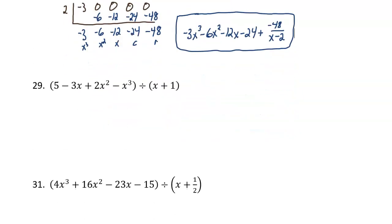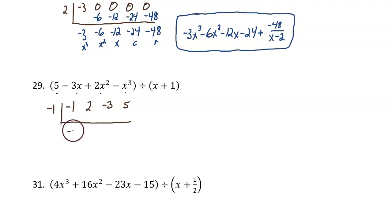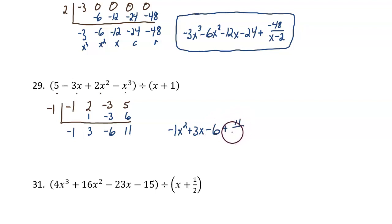Next, number 29. Notice how this polynomial is written backwards. When you list your coefficients, you have to do them in order of decreasing exponent. So we have negative 1 from the x cubed first, then positive 2 from x squared, then negative 3 from x, then positive 5. We're dividing in negative 1. Bring down negative 1. The result is negative 1x squared plus 3x minus 6 plus 11 over x plus 1.